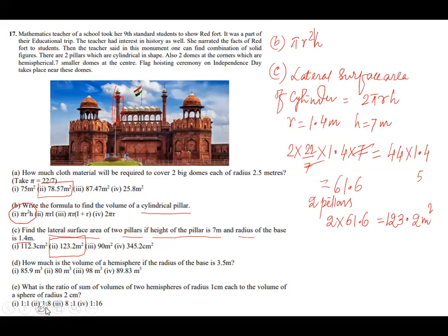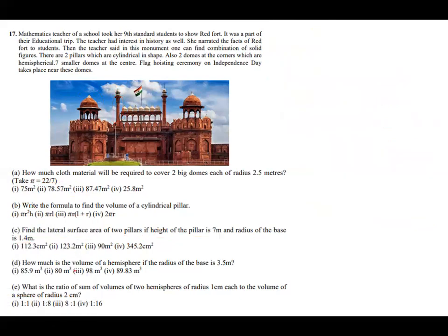Now coming to part D. Part D says how much is the volume of a hemisphere of radius of the base is 3.5. Volume of hemisphere, volume of hemisphere is formula 2 by 3 pi r cube. So this will be 2 by 3 into 22 by 7 multiplies r is equal to 3.5. So 3.5 multiplies 3.5 multiplies 3.5.